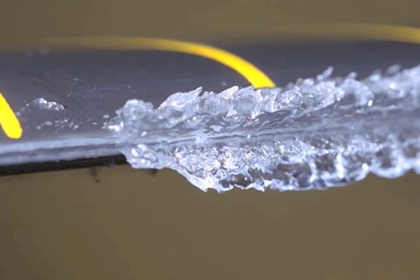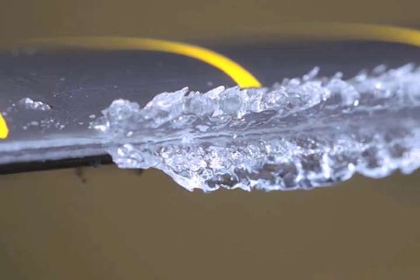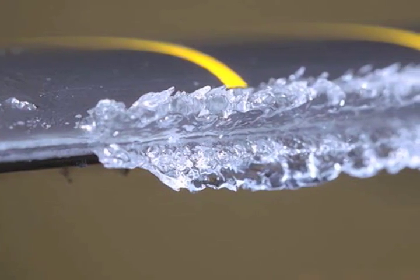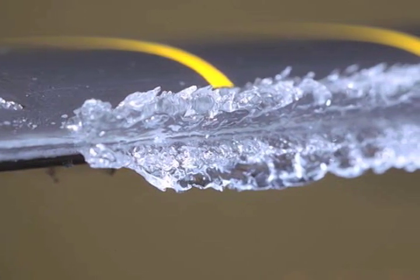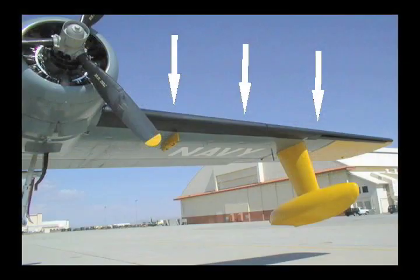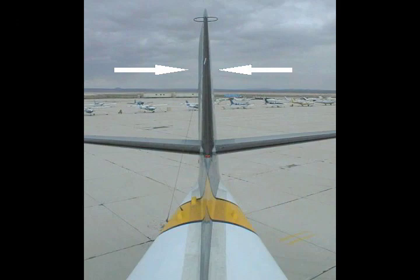Clear and rime ice can also form on airplanes that fly through supercooled clouds. To combat this, wingtips and other pointed leading edges of aircraft have anti-icing devices to either melt or crack off the ice.